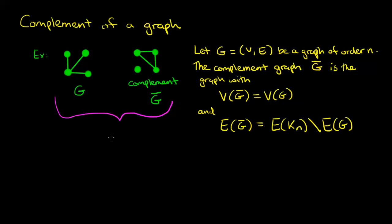If we take a look at our little example and we think of g together with g bar, we'll see that that does form all of the edges of the complete graph on four vertices. Here I'll just draw the ones from the complement in yellow to distinguish them from the ones from the original graph.